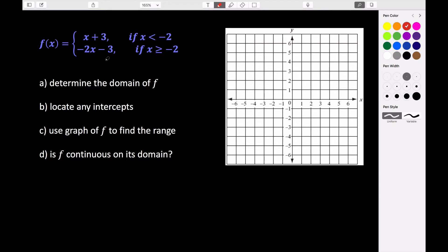So first we want to graph this, and the approach that we want to take is just treat each one like a line independently and then just limit the values that we choose to values less than negative 2. And then for this one do the same thing but limit the values to values greater than or equal to negative 2.